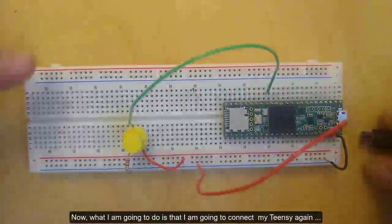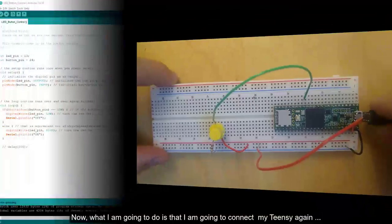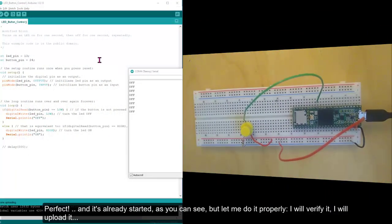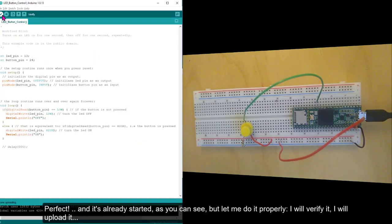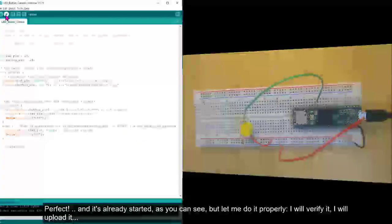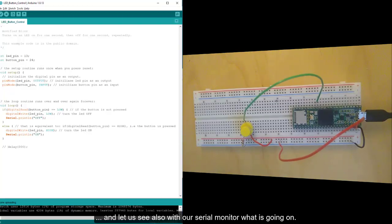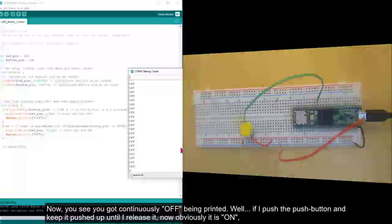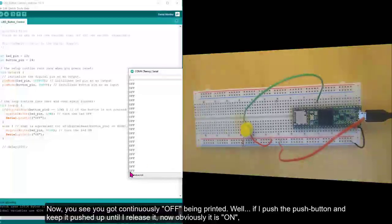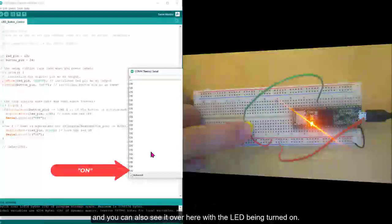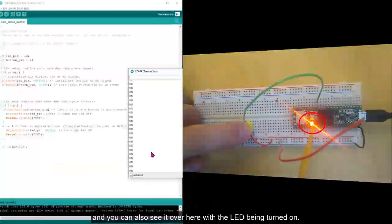Perfect. And it already started, as you can see, but let me do it properly. I will verify it. I will upload it. And let us see also with our serial monitor what's going on. Now, you see that continuously here you've got off being printed. If I push the push button and keep it pushed up until I release it, now obviously it's on. And you can also see it over here with the LED being turned on.